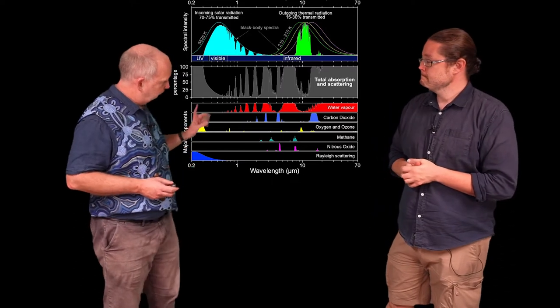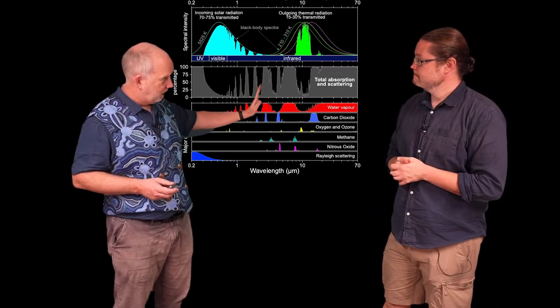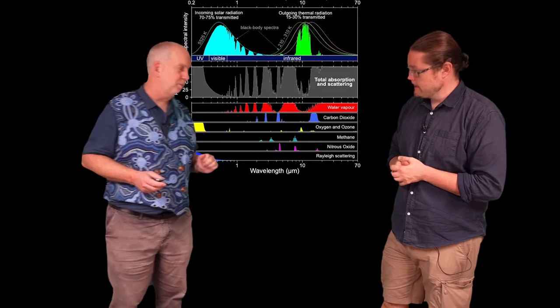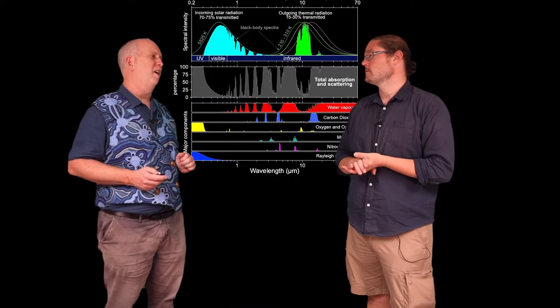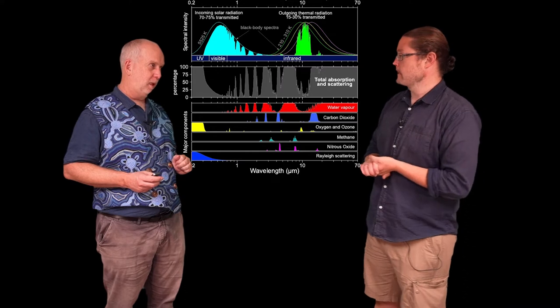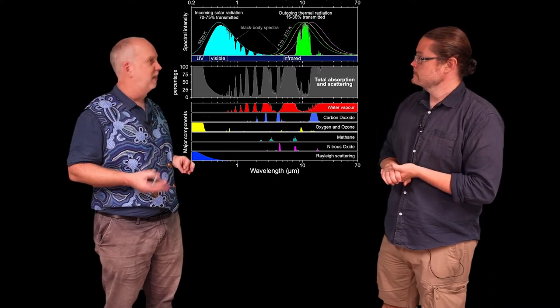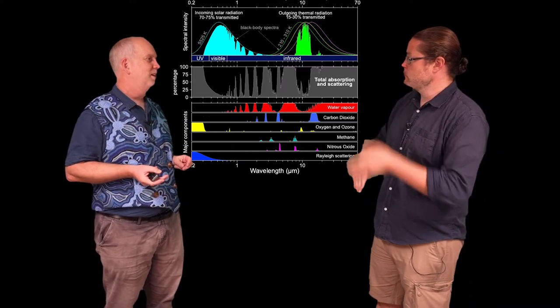So you've got visible light coming in and infrared going out. Now if you could block one and not the other you could change the temperature. So if you could block the visible light coming in but let the infrared radiation go out, we would cool down.